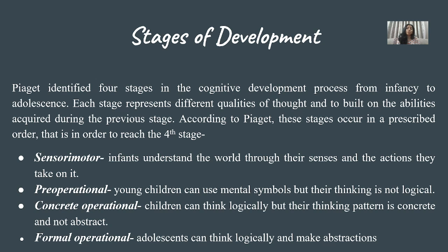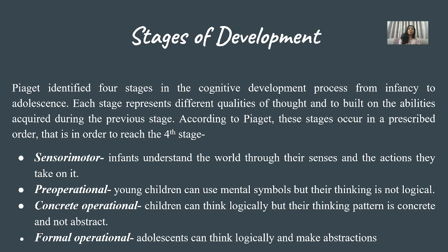The first stage is Sensorimotor, which covers infants. In the sensorimotor stage, infants understand the world through their senses and the actions they take on it. Pre-operational: young children can use mental symbols but their thinking is not logical. When we say pre-operational, it means that mental operations are not yet in place.